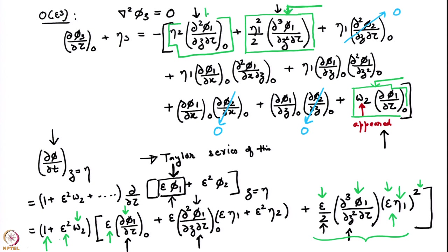Similarly, you can find where the third boxed term comes from. We need an η₂ — the only place in the last line where η₂ appears is here. There is an η₂ and then we need a second derivative of φ₁. So it is a product of η₂ with this second derivative and once again with 1. There is an epsilon squared here, and an epsilon there, making an order epsilon cube term. Multiplying with 1 gives this term.